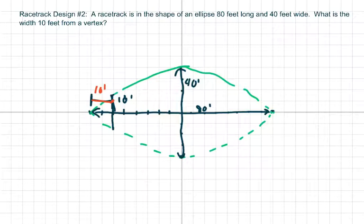We have the length of this is 80. The whole length here is 80 feet. That means this side here is going to be 40, and this side is going to be 40.